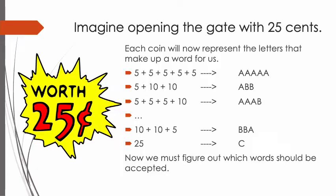Now let's think mathematically about how we can open the gate. First, you can throw five 5-cent coins to open the gate. This solution is perceived by the automaton as a string with five A's. Another solution is 5 plus 10 plus 10, perceived as A, B, B — and so on. Thus our problem has been transformed into a language problem.